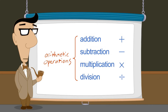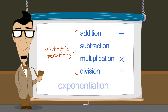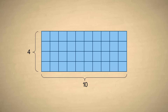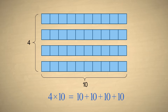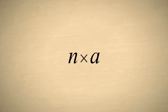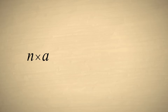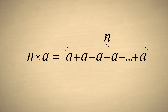In this lecture, we will introduce the mathematical operation of exponentiation. We saw that multiplication is just shorthand for repeated addition. For example, multiplying four times ten is the same as adding four tens together. If we let the letter n represent any integer, and a represent any number, we can say that n times a is the same as adding n a's together.